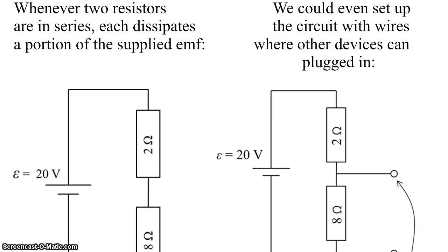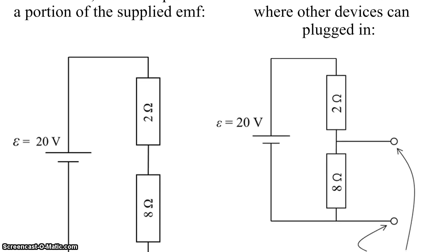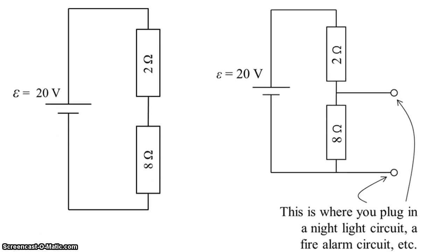We already know a couple of things that will be useful. For example, take a look at the picture on the left. Whenever we have something like this, two resistors in series, together they dissipate all 20 volts supplied by the EMF source. But they may not dissipate the 20 volts evenly.